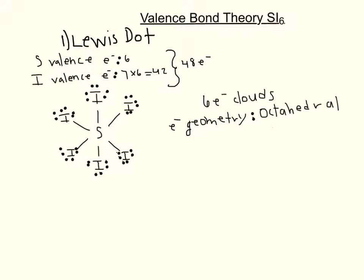I will first be discussing the Lewis dot structure, which will help us determine the VSEPR for this molecule. For the Lewis dot structure, we're going to have to determine the total amount of valence electrons within the molecule, and this will help us draw the structure.